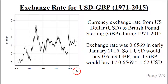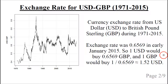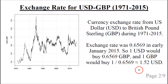It is shown in this plot. In early January 2015, the exchange rate was 0.6569. This means that one US dollar would buy 0.6569 British pound sterling. And conversely, one British pound sterling would buy one divided by 0.6569, which is approximately equal to 1.52 US dollars.